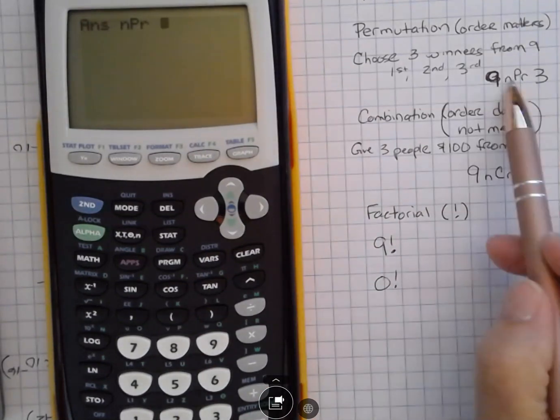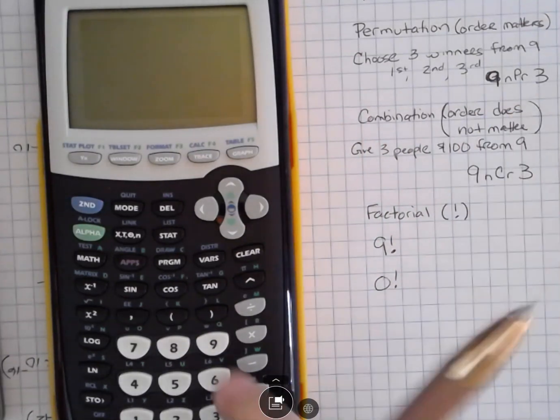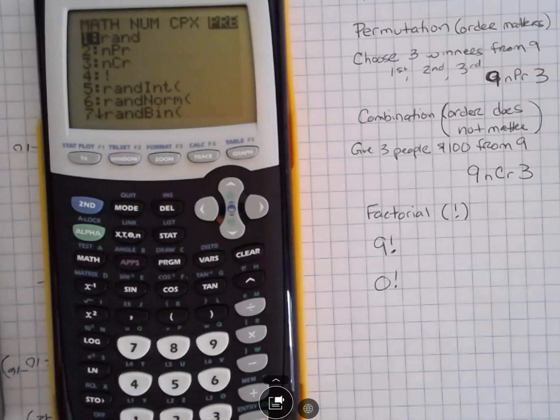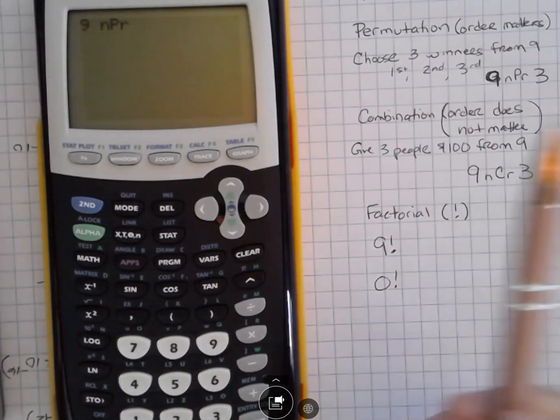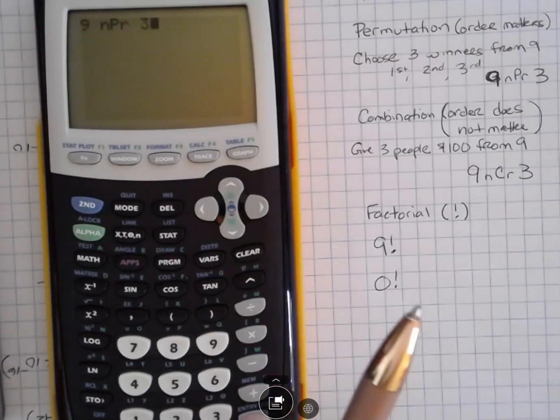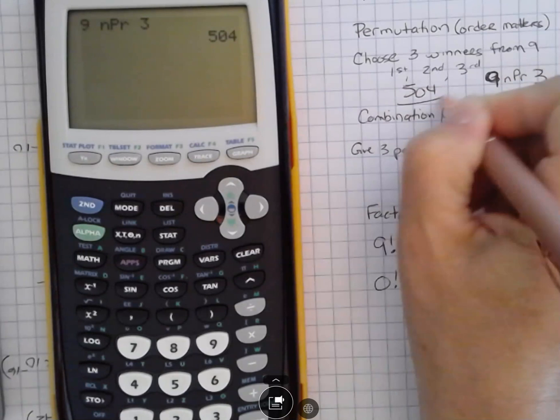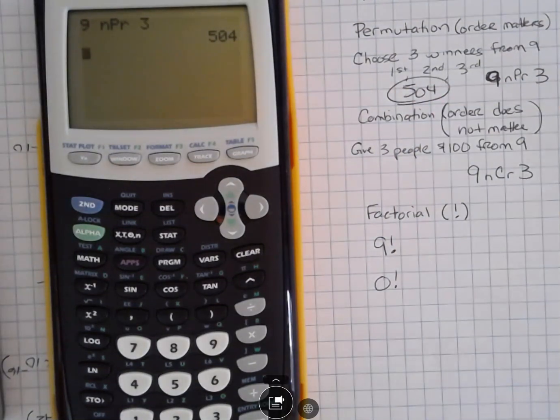But if I want to enter this, I want to enter the nine first. So I have nine, then math. I'm going backwards and then I'm just going to hit number two because it was two on the list. And then I want to choose three and I hit enter and that gives me 504, 504 different ways that a first, second, and third winners could come in.